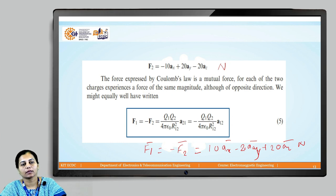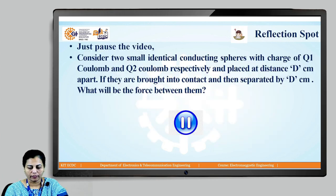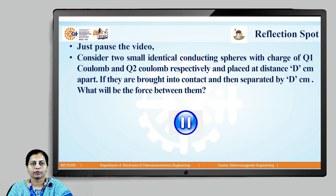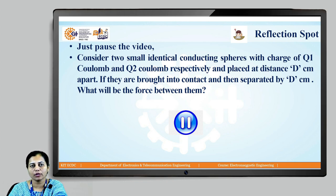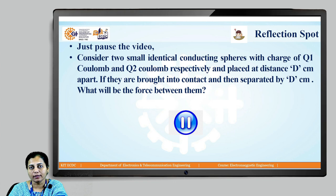We have discussed the concept of Coulomb's law. Now here is a reflection question — pause the video and try to answer it. Consider two small identical conducting spheres with charges Q1 Coulomb and Q2 Coulomb respectively. They are placed at distance d centimeters apart. If they are brought into contact and then separated by the same distance d, what will be the force between them?